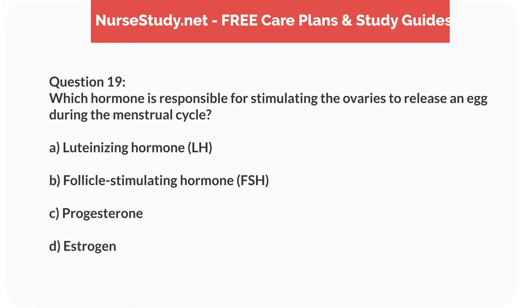Question 19. Which hormone is responsible for stimulating the ovaries to release an egg during the menstrual cycle? A. Luteinizing hormone (LH). B. Follicle-stimulating hormone (FSH). C. Progesterone. D. Estrogen.